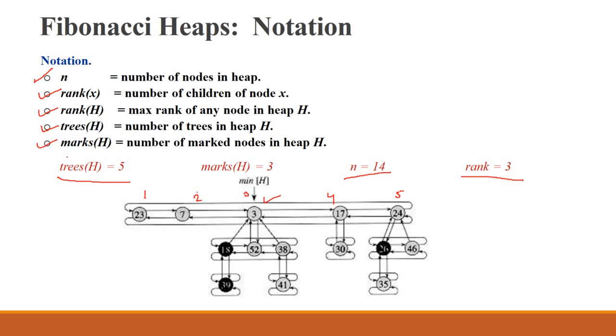Next point is marks of heap - number of marked nodes in heap H. We can find the marked nodes which are 18, 39, and 26. It means 3 marked nodes, so marks of H equals to 3.